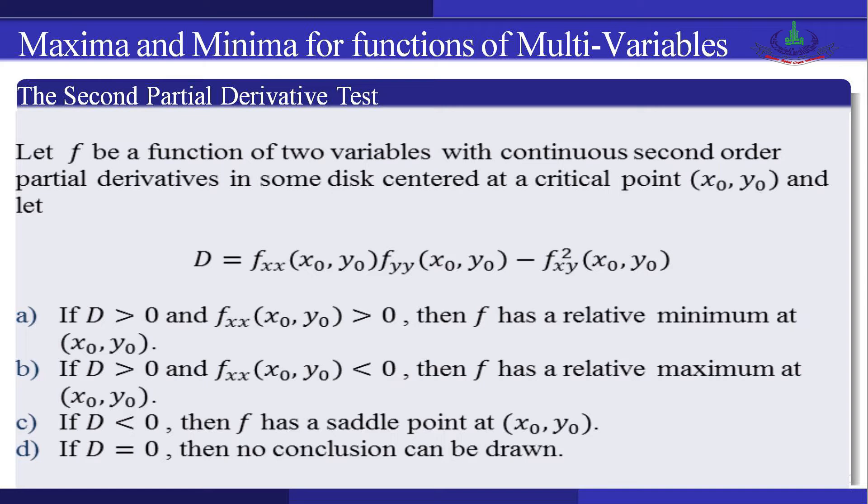Case 1: if D > 0 and f_xx > 0, then f has a relative minimum at (x₀, y₀). Case 2: if D > 0 and f_xx < 0, then f has a relative maximum at (x₀, y₀). Case 3: if D < 0, then f has a saddle point at (x₀, y₀). Case 4: if D = 0, no conclusion can be drawn and we cannot apply this test.